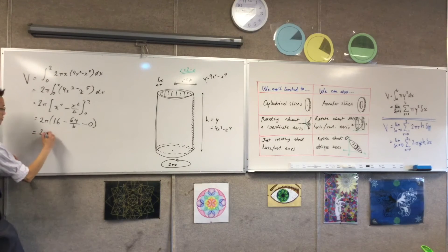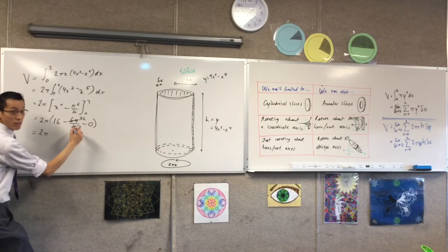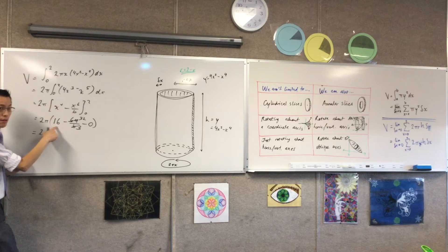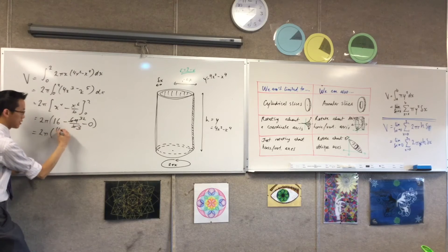Let's see here. This thing I can simplify to be 32 on 3. That's going to be 48 on 3. 48 take away 32 is 16.